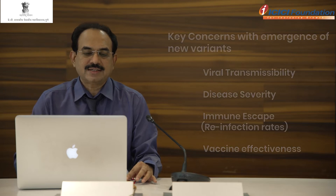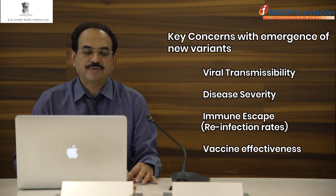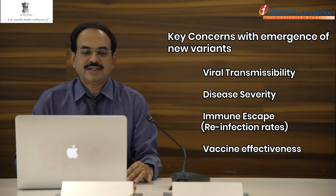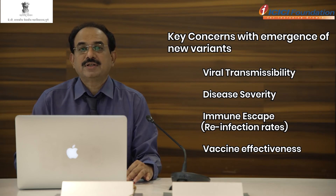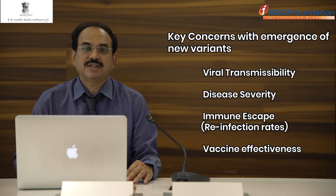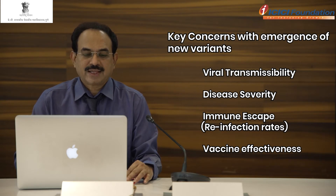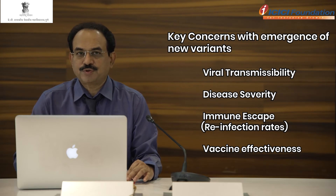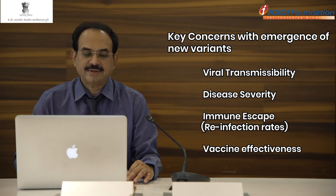The key concerns of emerging new variants: first is virus transmissibility — that it is transmissible easily. For example, the 617 variant is 50 times more transmissible than the UK variant. Then, it can increase disease severity, but most of them have not shown to be serious in nature.